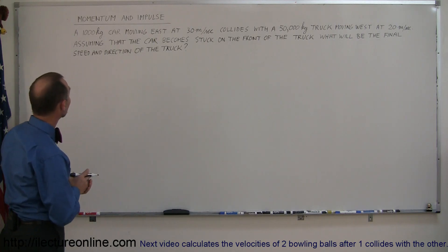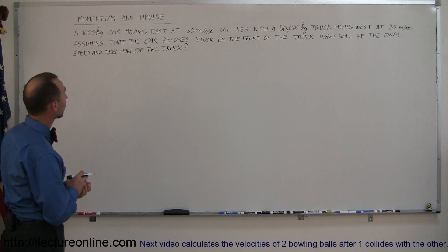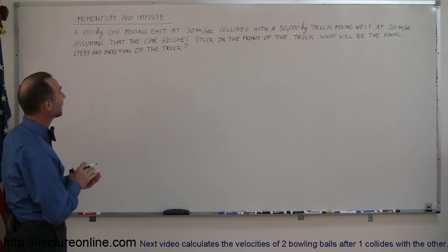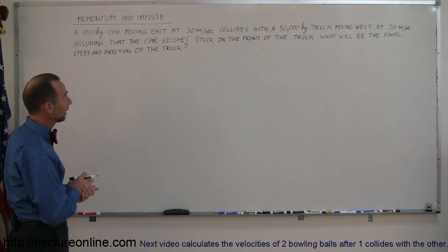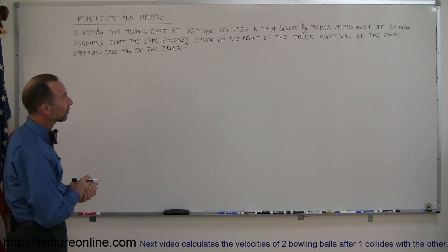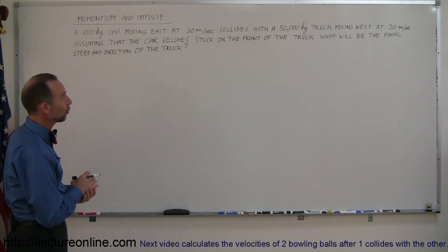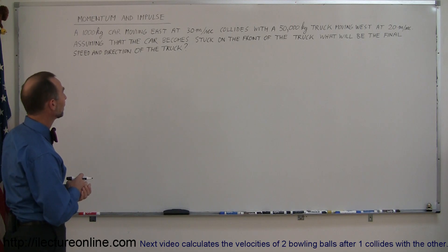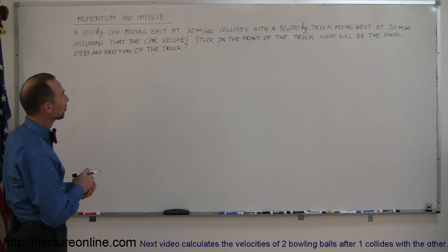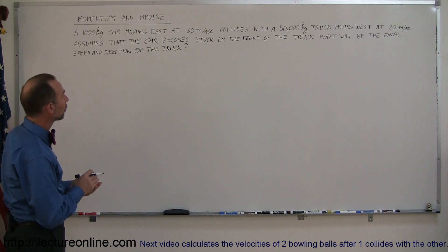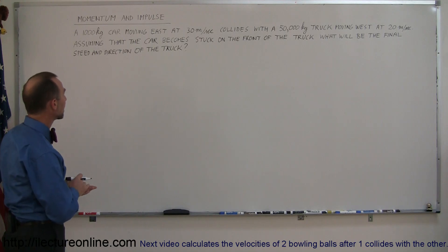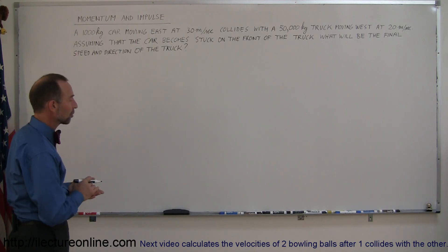We have a 1,000 kilogram car moving east at 30 meters per second, and it collides with a 50,000 kilogram truck moving west at 20 meters per second. Assuming that the car becomes stuck on the front of the truck, what will be the final speed and direction of the truck?